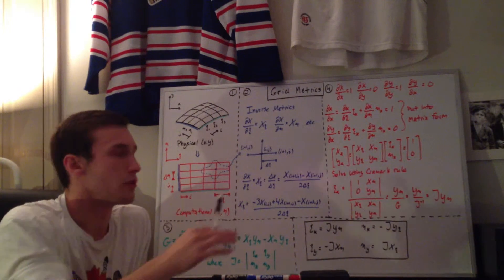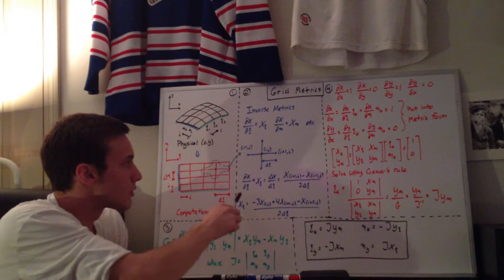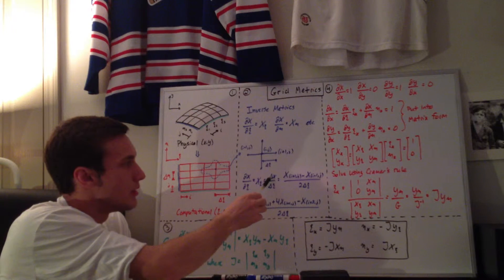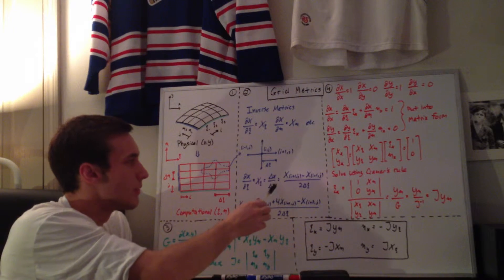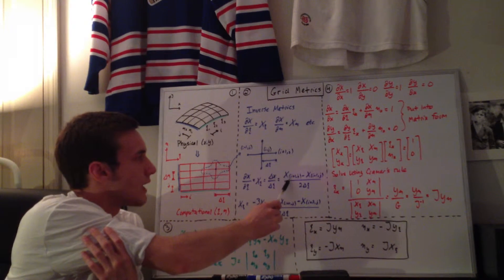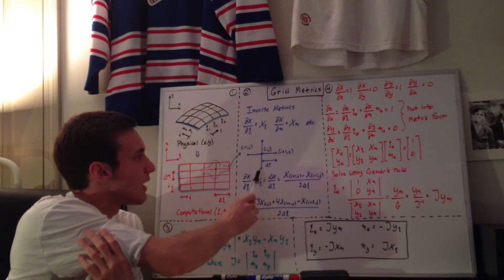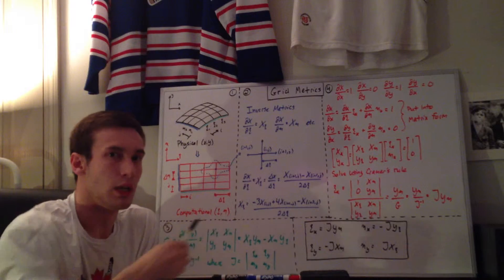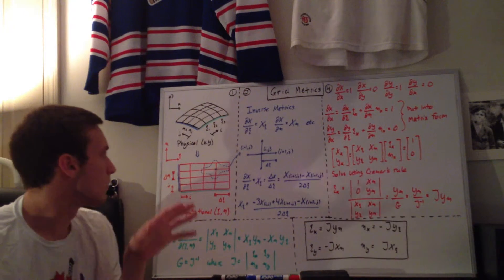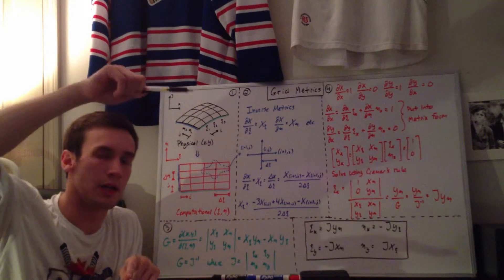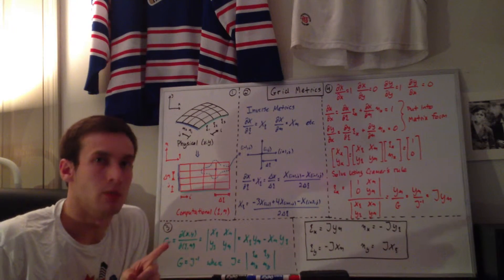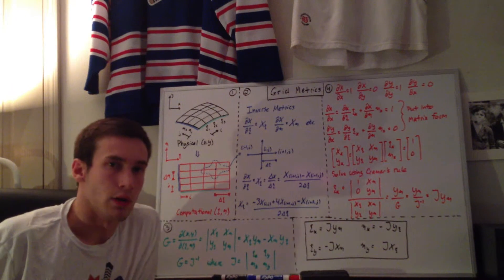Similarly, for dx/d-eta, you have x sub eta, which is the change in x over change in eta. Since we're in the eta direction now, we're going in the vertical direction: x of i,j+1 minus x of i,j-1 all over 2·d-eta. Since d-eta equals one, the denominator is also two. That's all well and good for the interior nodes, because you have a plus node and a minus node for every single interior node. What do you do with the boundaries, though?